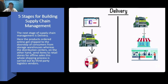The next stage of supply chain management is delivery. Here, products ordered online get shipped to the doorstep of consumers from storage warehouses. Distribution centers, on the other hand, send items to retail stores for offline sales. This whole shipping process is carried out by third-party logistic vendors. This phase deals with the production, sales, and distribution of products across all retail stores. It is a logistics phase where customer orders are approved and product delivery is set into motion.